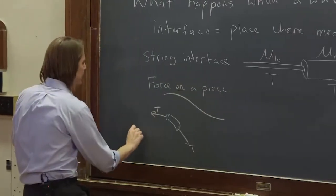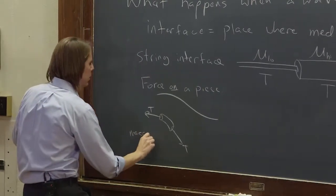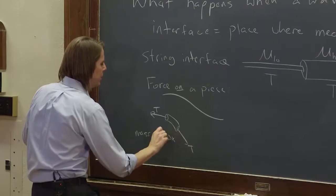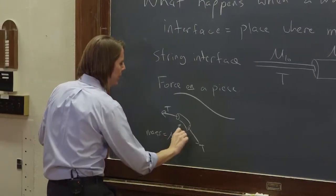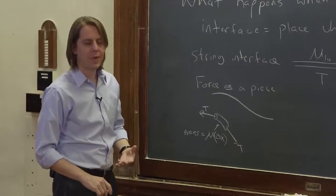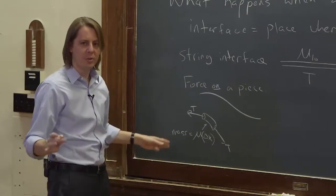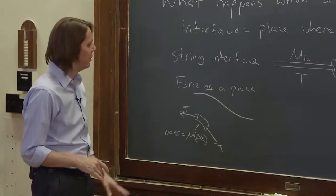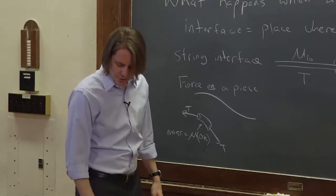And this thing has a mass, the mass density times Δx, because that was a finite piece of string. And we applied Newton's second law, F = ma, to this mass. That's how we did it. That's not what we're doing now.